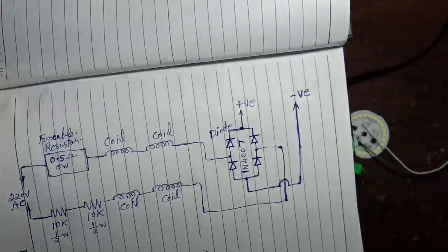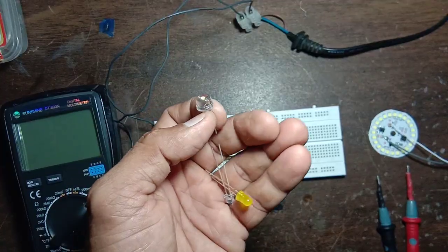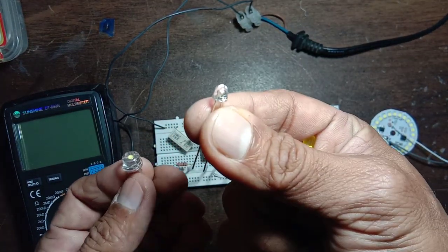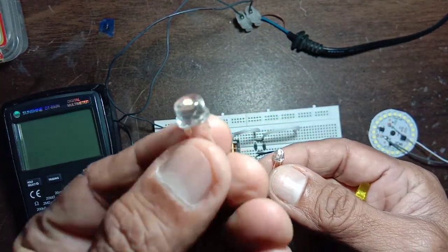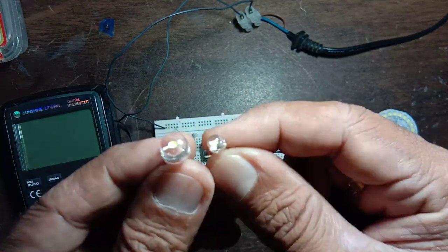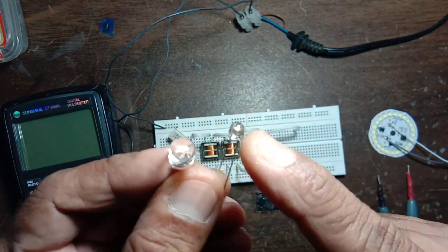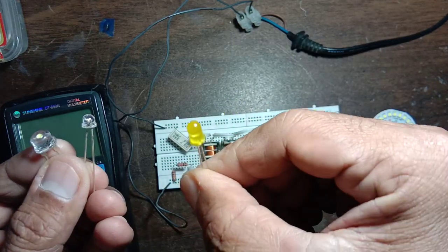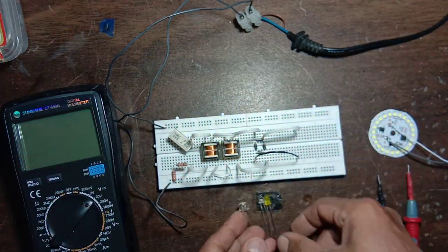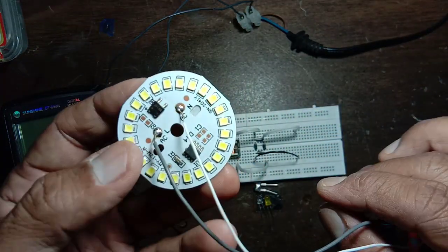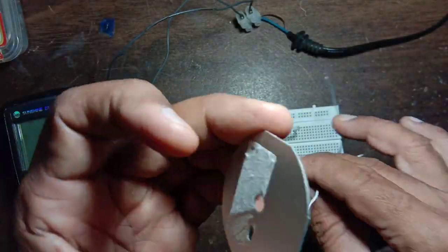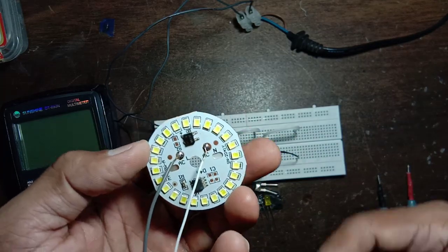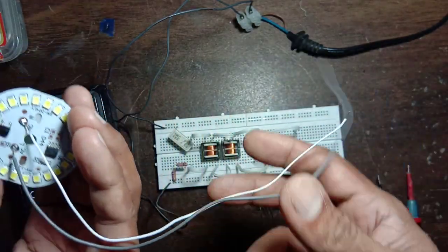Now I will show the demo. I have one 5mm LED and one 8mm LED — both clear white LEDs — then a normal yellow color LED. I also have a DOB, which is a direct-on-board LED that we can give direct AC to.